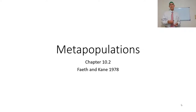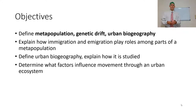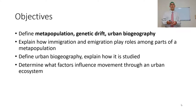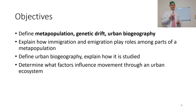Metapopulations. What happens when you get multiple populations of an organism that can interact and intermingle with one another? Define metapopulation, define genetic drift — this should be something you could look back to your Hardy-Weinberg for — define urban biogeography, explain how immigration and emigration play roles among parts of a metapopulation, explain how it's studied, and determine what factors influence movement through an urban ecosystem.